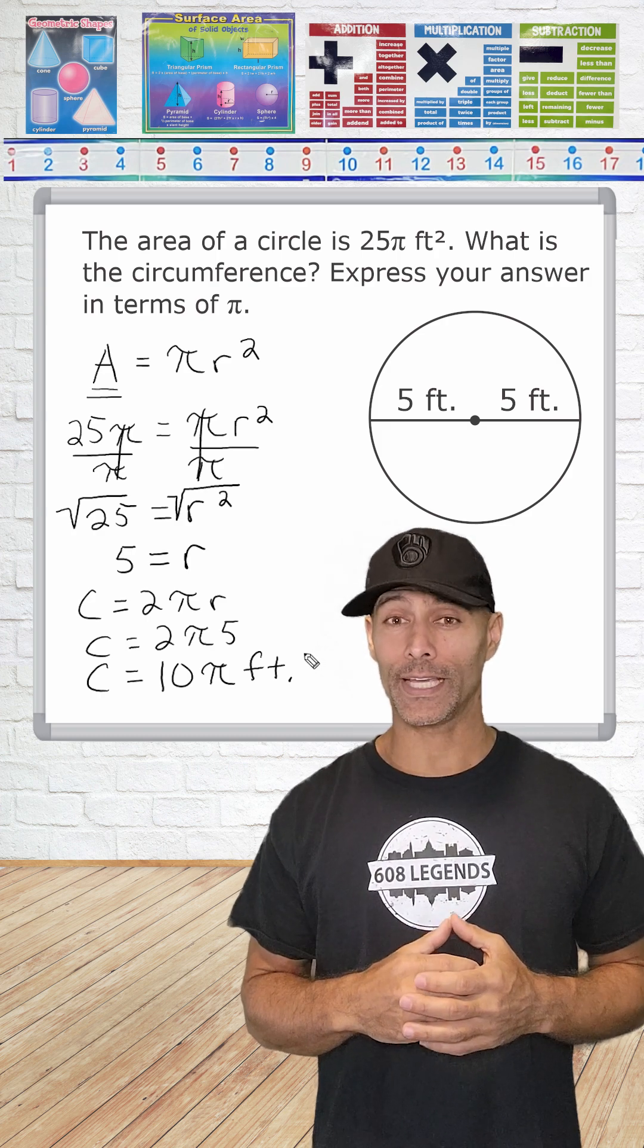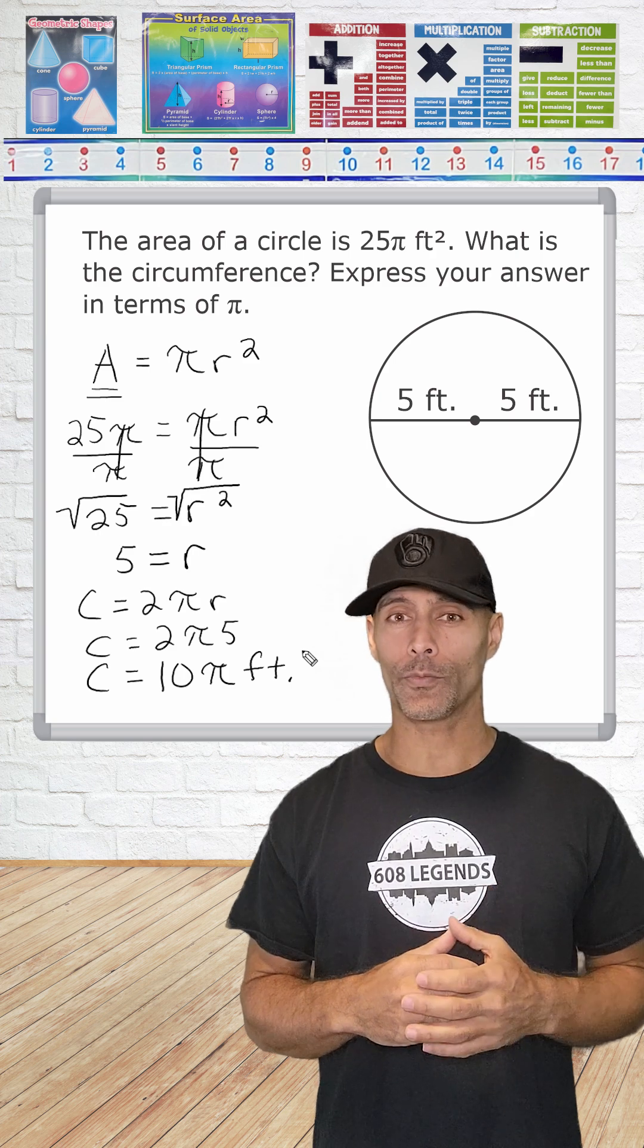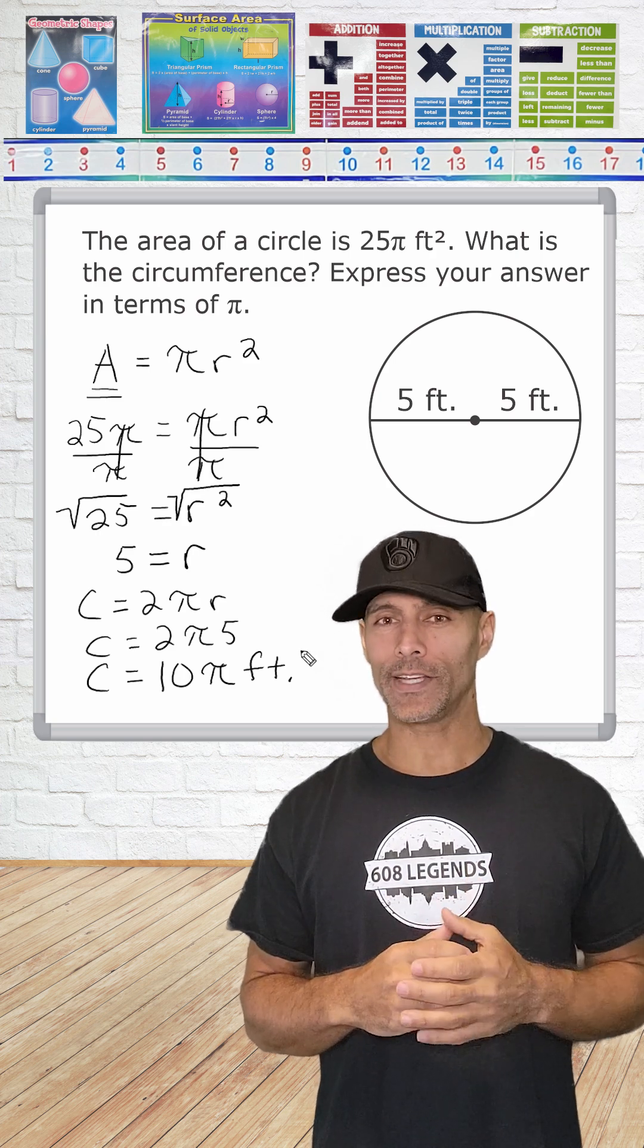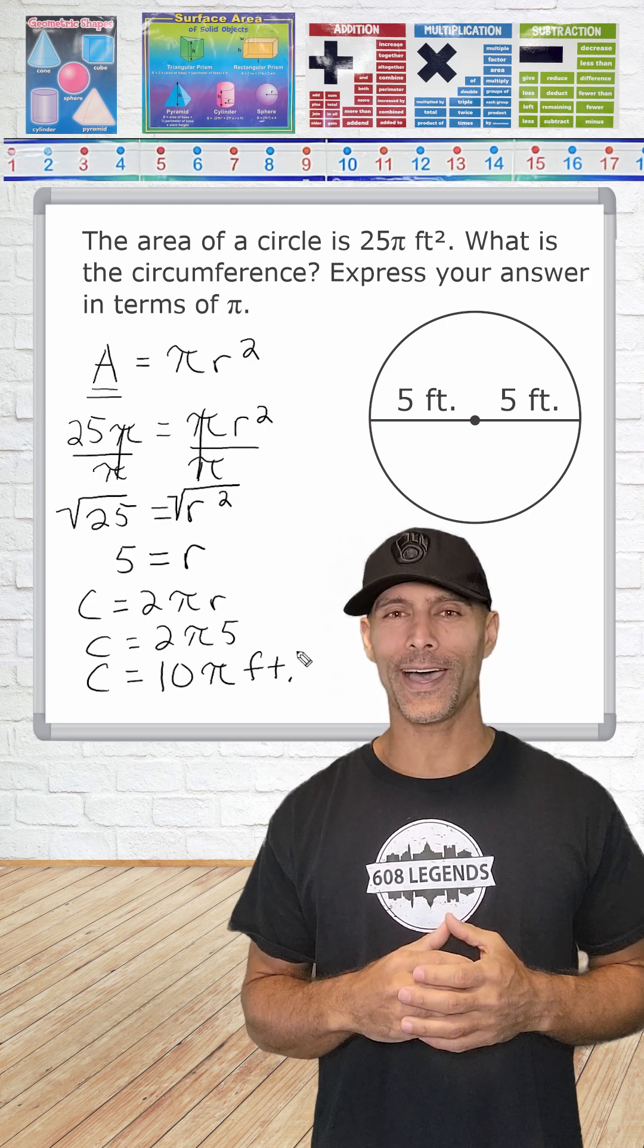So remember, when given the area in terms of π, take the coefficient of π, and then take the square root of that number, which gives the radius, and then double that number to get the diameter length, and then multiply that by π.